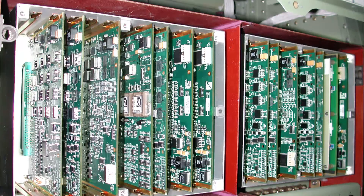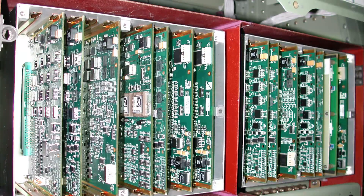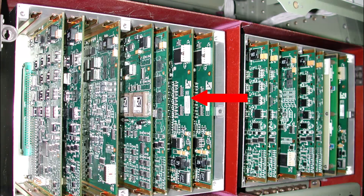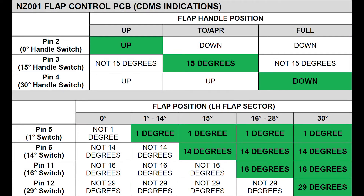There are two printed circuit boards that monitor flap system proximity switches. Both hold information on the flap handle switches, but the flap sector pins for each side are on different boards. The flap control PCB, NZ001, shows information about the four proximity switches in the left flap sector. As shown in the troubleshooting chart, pins 5, 6, 11, and 12 correspond with the left flap sector proximity switches.